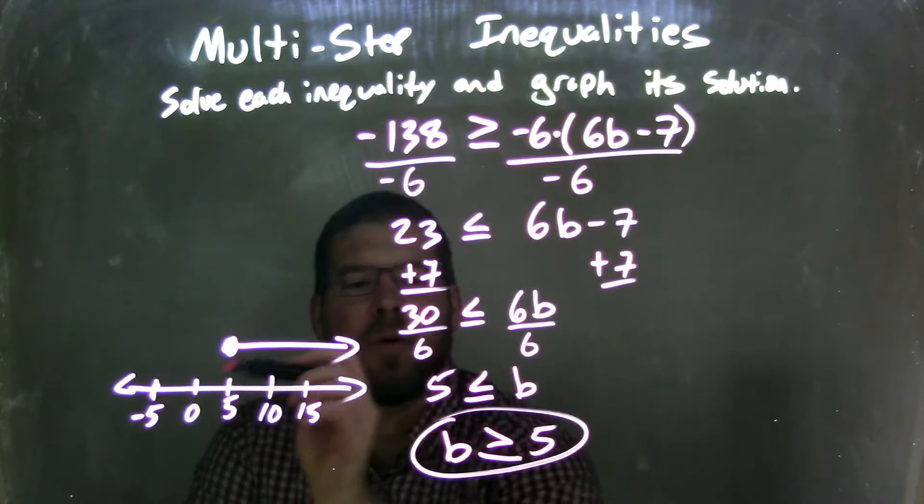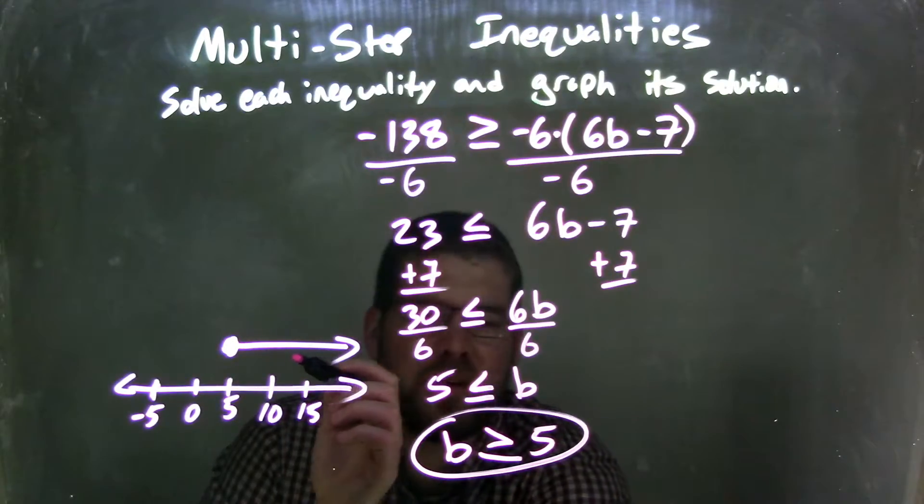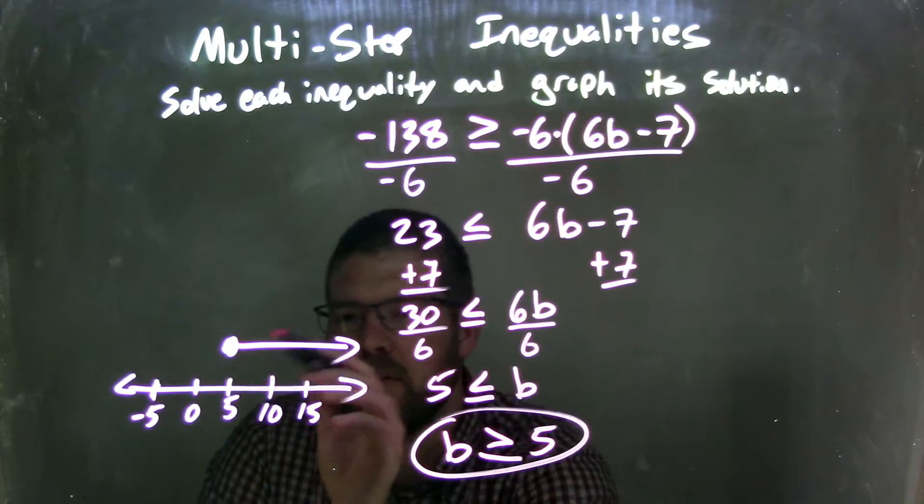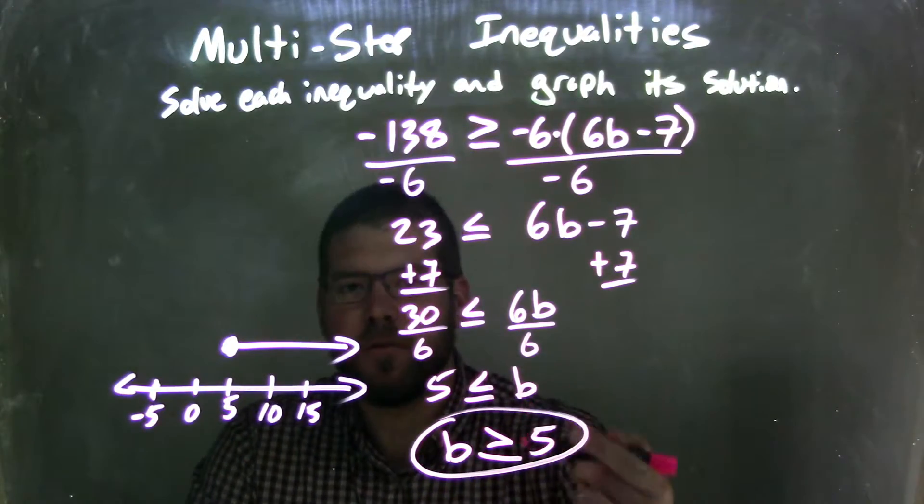So that answer now I need to graph. So I have a closed circle because it's equal to 5. And I shaded to the right because we said b was greater than also 5. So this graph matches my final answer, which was b is greater than or equal to positive 5.